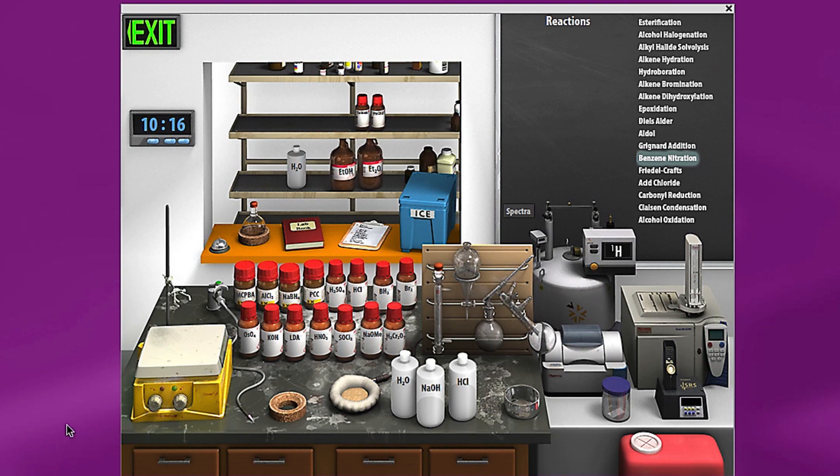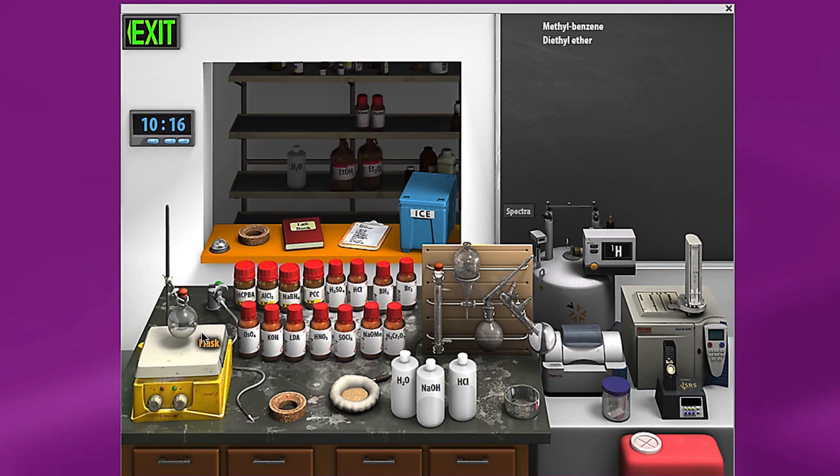So in this experiment, the worksheet asks you to make 1-methyl-2-nitrobenzene. In order to do that, I'll need to take methylbenzene as one of my reactants and place it in my flask. I can add ether as solvent, bring my flask out here to the stir plate. The reagent I need to add is nitric acid.